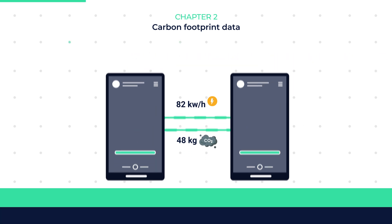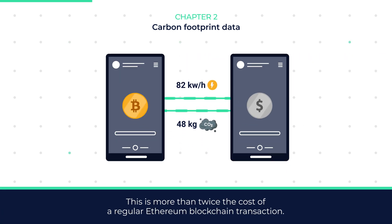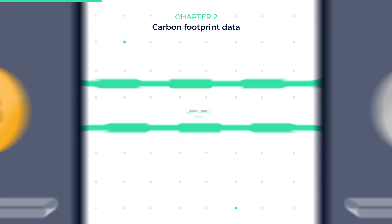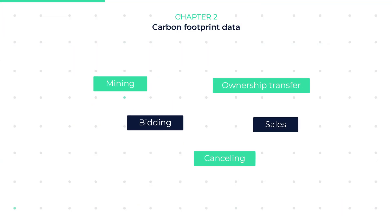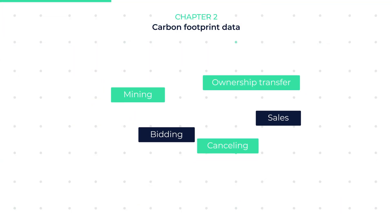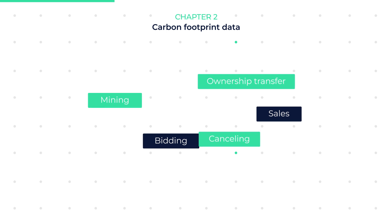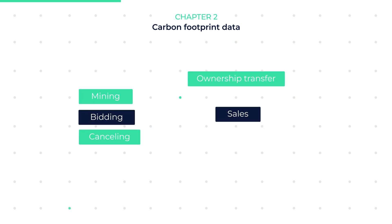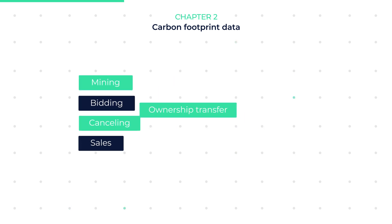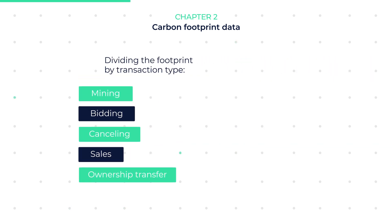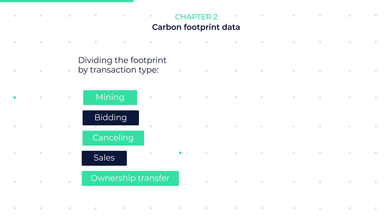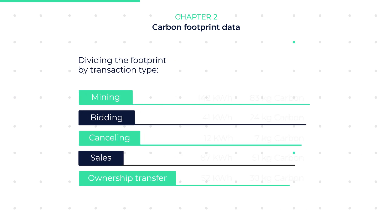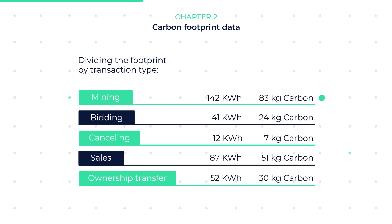This is more than twice the cost of a regular Ethereum blockchain transaction. Now, a single NFT may include many transactions, including minting, bidding, cancelling, sales, and ownership transfers. Dividing the footprint by transaction type, we get: minting — 142 kWh, 83 kilograms of carbon; bids — 41 kWh, 24 kilograms of carbon.